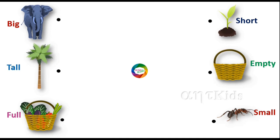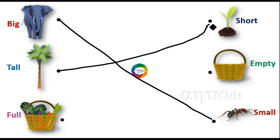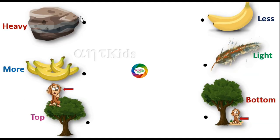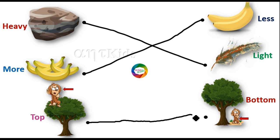Big, small, tall, short, full, empty, heavy, light, more, less. Top: monkeys on the top of the tree. Bottom: monkeys on the bottom of the tree.